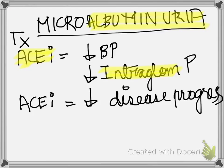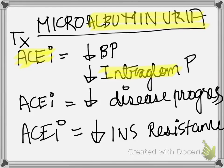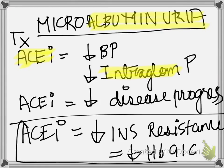By decreasing intraglomerular pressure, ACE inhibitors also have an indirect effect on HbA1c — although not a direct effect. HbA1c has nothing to do with high blood pressure or hypertension directly, but ACE inhibitors can contribute indirectly by decreasing insulin resistance, and therefore have a modulatory effect in decreasing HbA1c. This can pretty much be considered a minor side effect of ACE inhibitors.